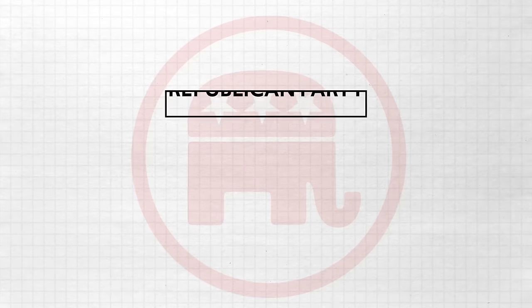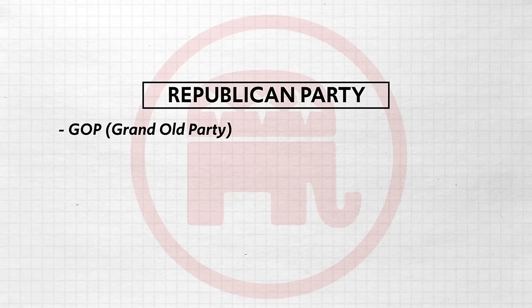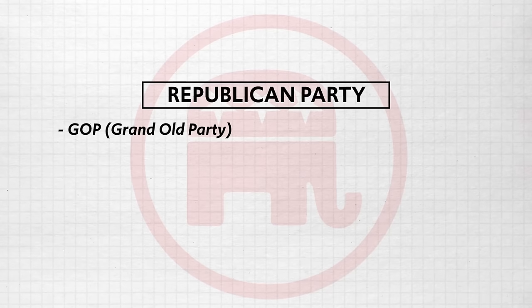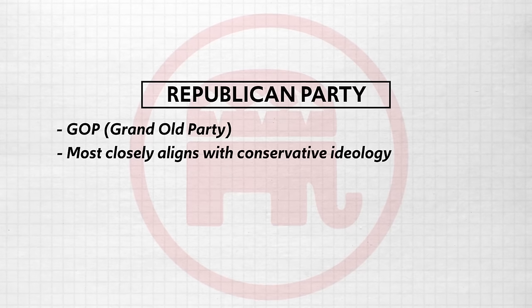Let's talk about the two major political parties in America and how they align with the ideologies we just covered. The Republican Party, often referred to as the GOP or the Grand Old Party, most closely aligns with conservative ideology. The way you know that is by looking at their party platform, which is a set of policy goals published by the party that tells you the kinds of legislation they would pursue should their candidate win an election. If you look at the Republican platform, you can see conservative ideology dang near everywhere.